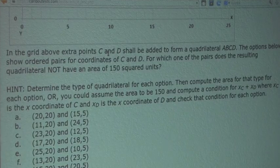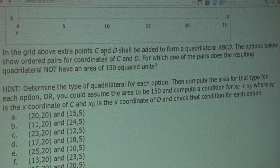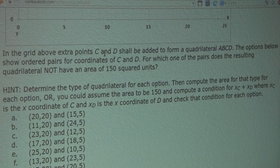The options below show ordered pairs for coordinates of C and D. For which one of the pairs does the resulting quadrilateral not have an area of 150 squared units?